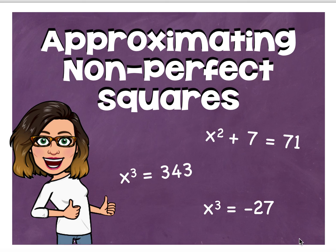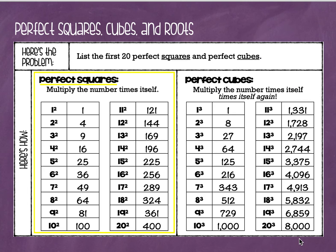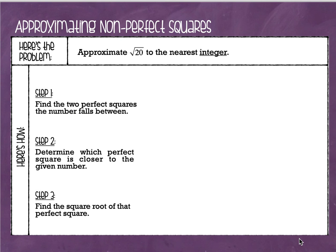Hey everyone, today's lesson is approximating non-perfect squares. If you have a copy of the lesson worksheet, take that out now. If you don't, grab a sheet of loose-leaf paper. You're also going to need a pencil, a calculator, and a list of perfect squares unless you already have them memorized. You may still have the sheet that has the perfect squares and the perfect cubes listed. We're only going to be using the left side today because we're only doing problems that involve perfect squares. Let's get started.